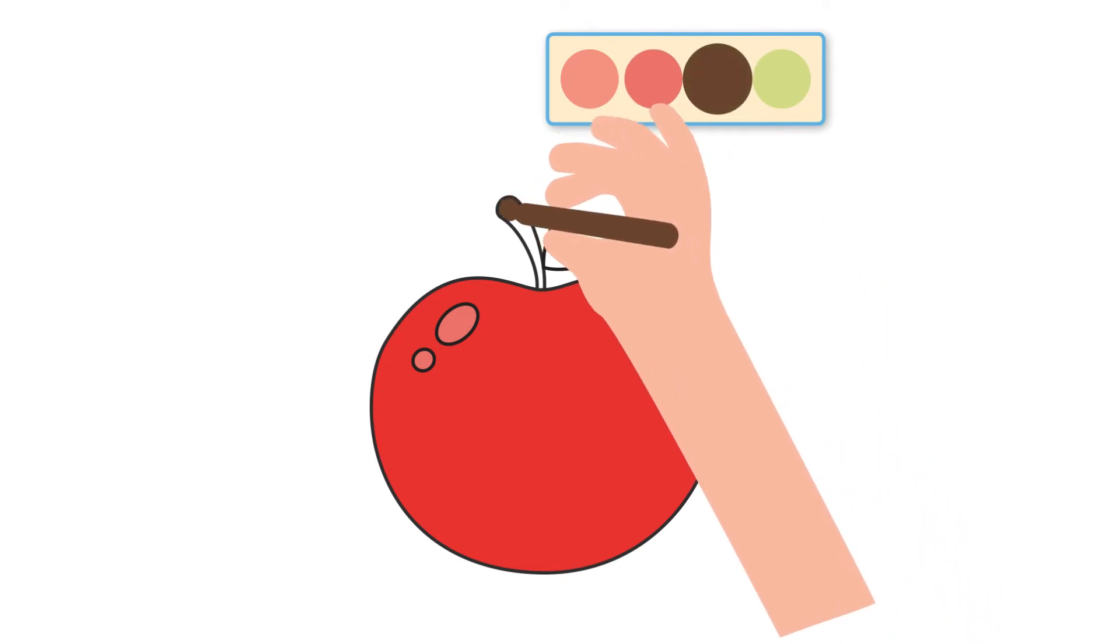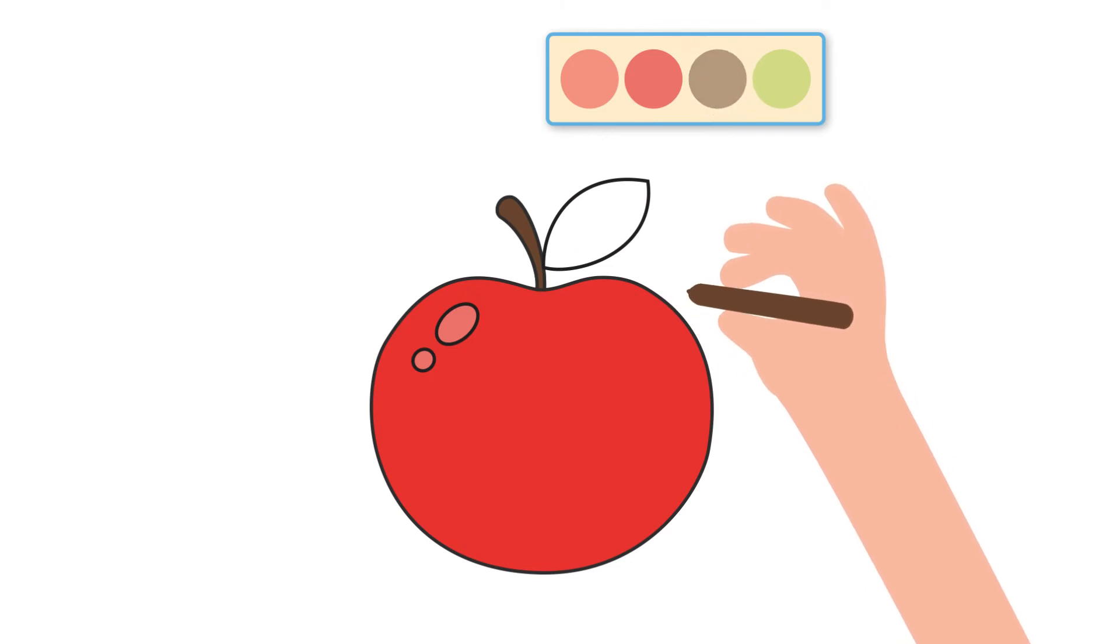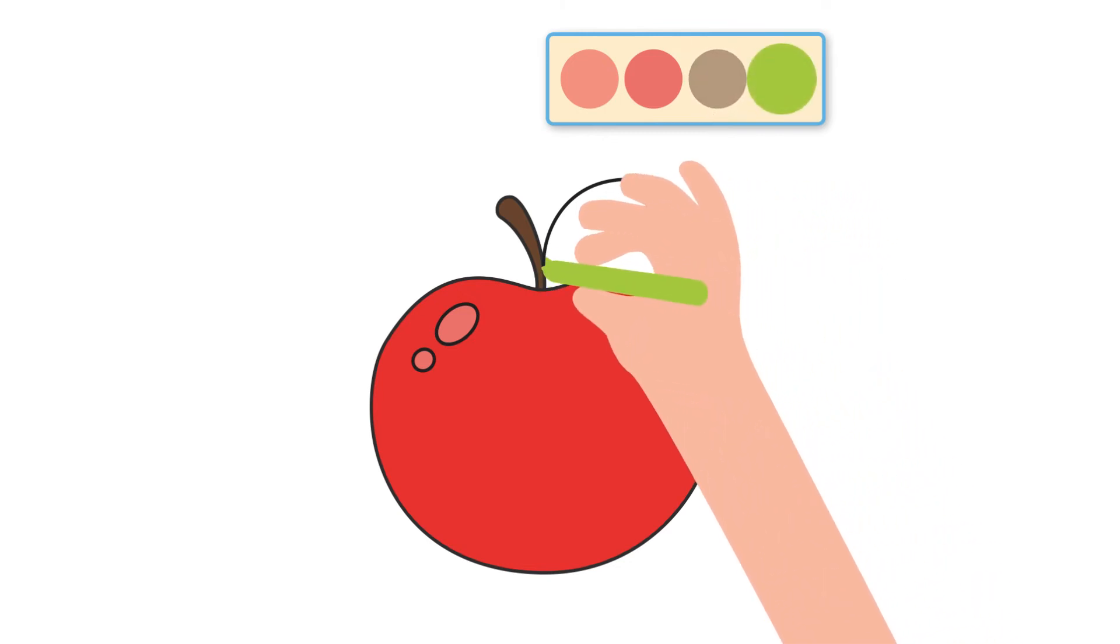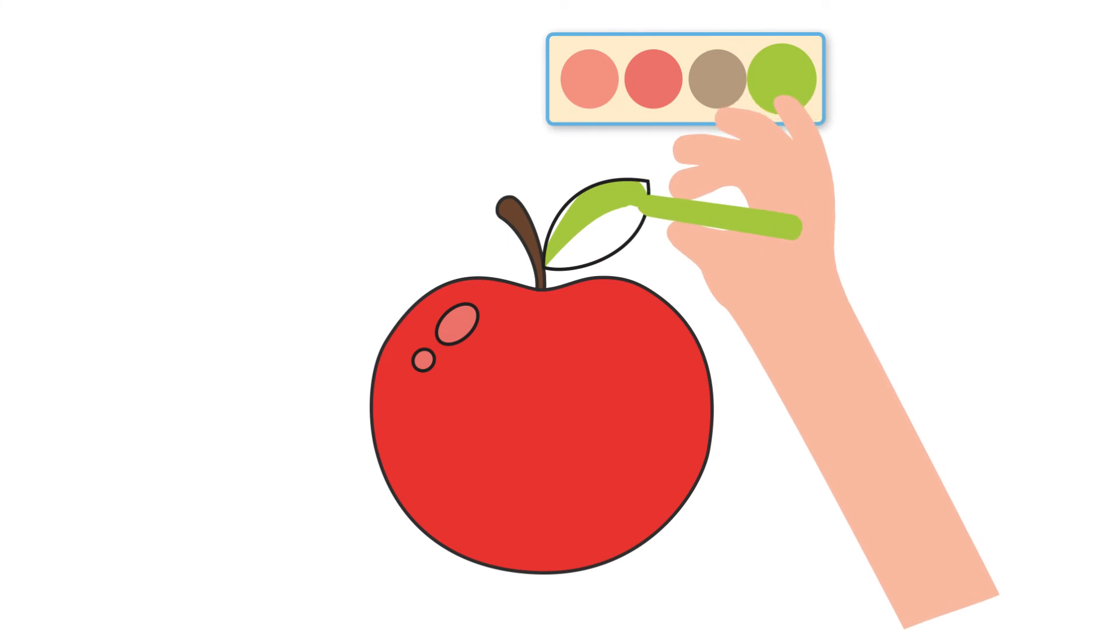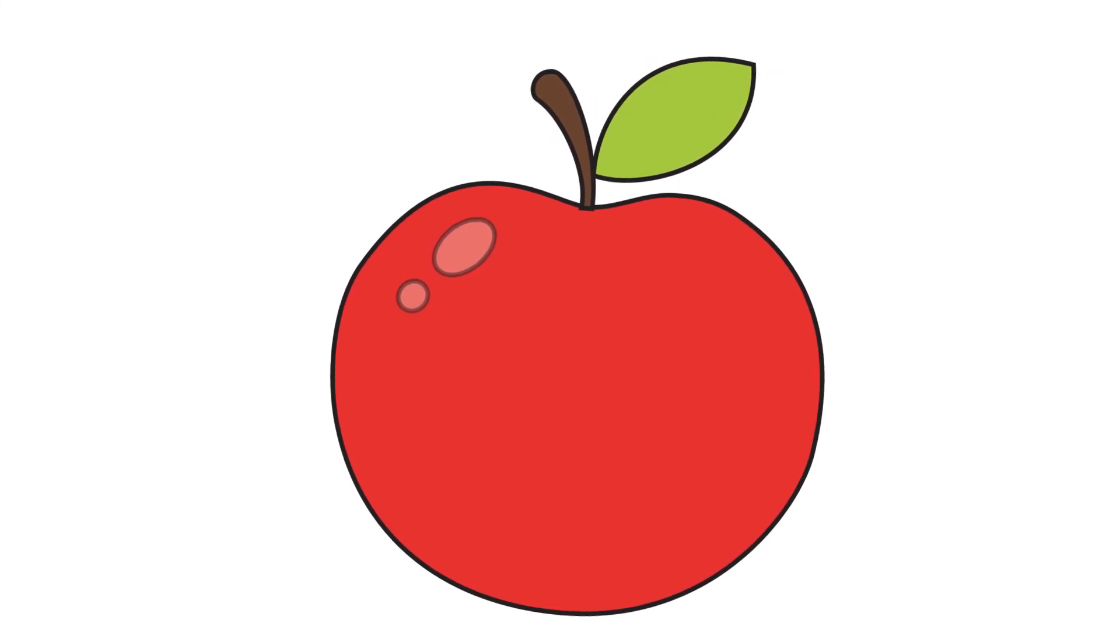Now it's time to color the stem with brown color. At the end, we are going to color the leaf with light green. Amazing, I just can't believe the apple is looking so good. Now let me share a few facts about apples.